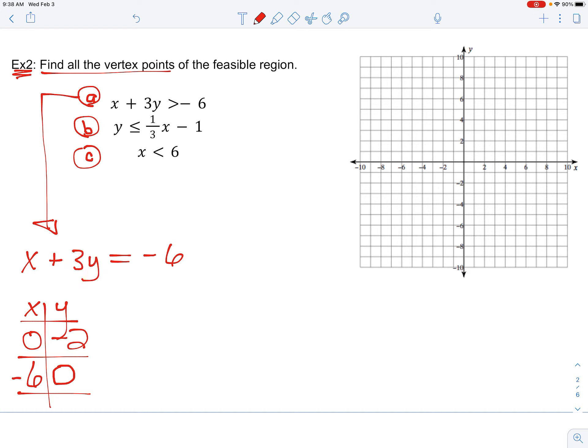So now I've got those two points, zero comma negative 2, and negative 6 comma zero. Got to make sure that I remember that it's an inequality, so I am dashing that line in.